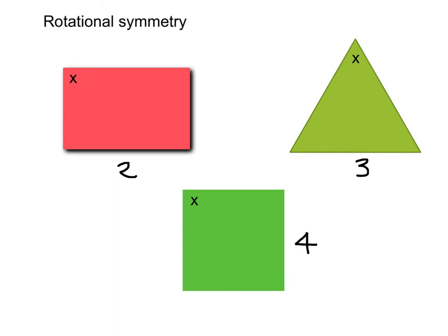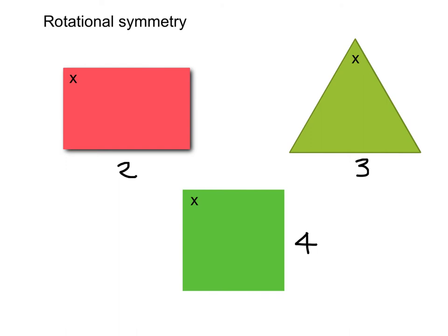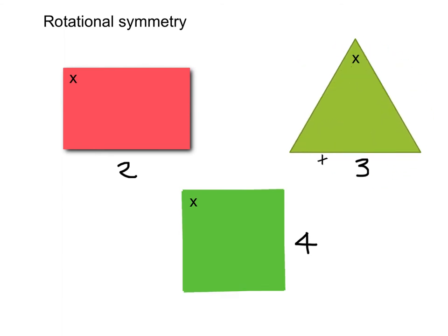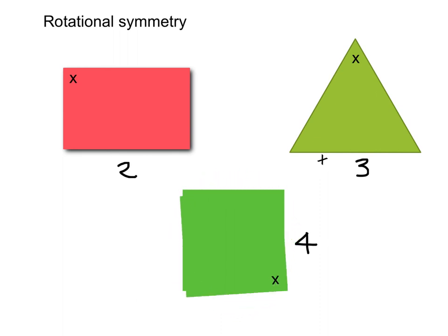Finally, we can do a simple demonstration. This is order two rotational symmetry. This is order three — one, two, three. And this is order four — one, two, three, four. Overlapped for four times. Overlapped for five times.